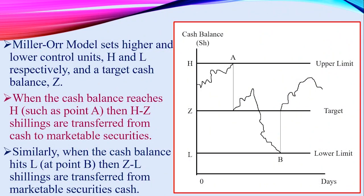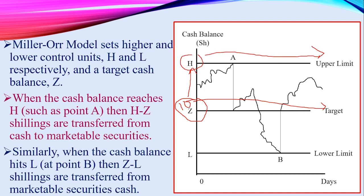We can express this model using a graph. The target cash balance is the amount that the organization normally spends — what you need on a day-to-day basis. For example, if your target cash balance is 10,000, that is the amount needed to settle all requirements at any given time. You then set a higher limit — called H or the upper limit — the amount you should not exceed at any given time.